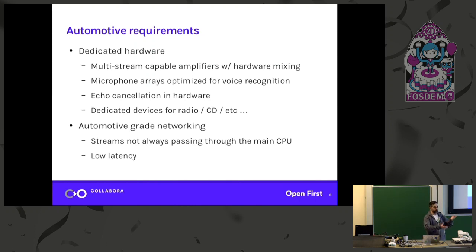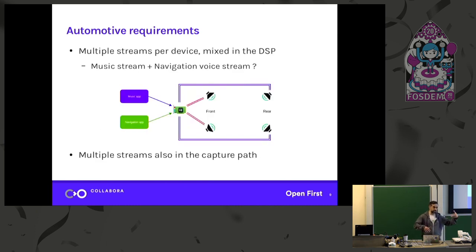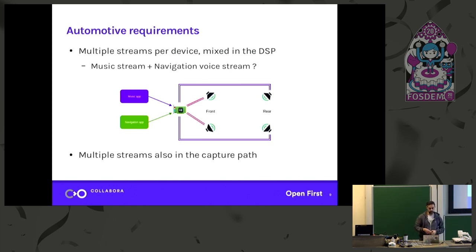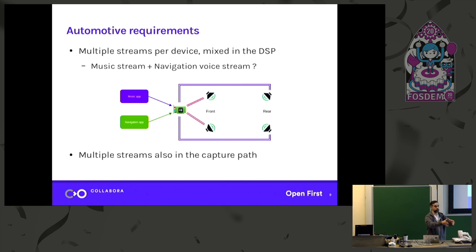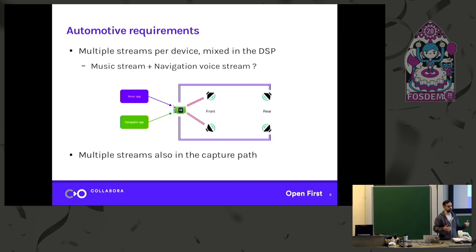And you need low latency, because you may want to implement echo cancellation. On the software side, on the IVI system, when you want to play something, apps have different contexts. There are apps that play music in a multimedia context. And there are other apps doing something special, like your navigation app, which every once in a while says 'please turn left in 100 meters.' That sound needs to be treated specially, because you want to make sure the driver can hear it — play it on the front speakers, amplified, and lower the music while it's playing. So you have to treat it in a different path than the music.